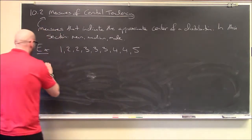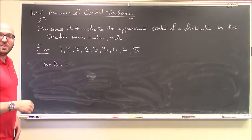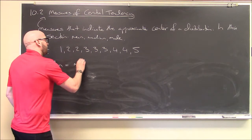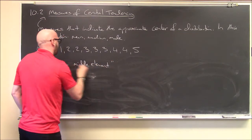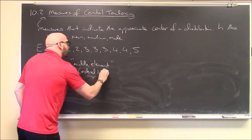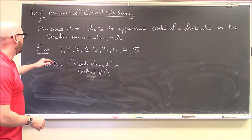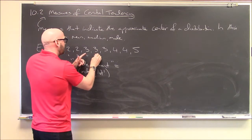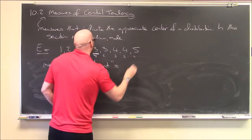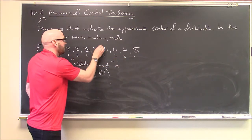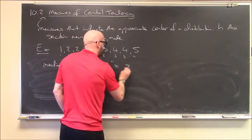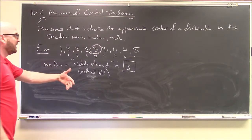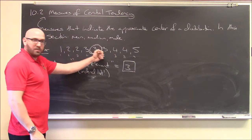Next up, the median. The median is — as long as your elements are in order from smallest to largest — the middle element. This list is already ordered. I have 9 elements, so the middle is the 5th: element 1, 2, 3, 4, then 5 in the middle, then 6, 7, 8, 9. I've got 4 elements on each side, so the 5th element, which is 3, is the median. In this case the mean and the median are the same number, but they don't have to be.